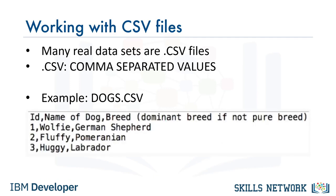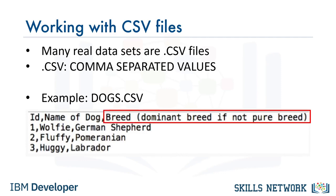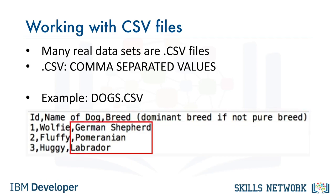Sample contents of the dogs.csv file are shown here. The first row in the table, in many cases, contains attribute labels which map to column names in a table. In dogs.csv, the first row contains the names of three attributes. Id is the name of the first attribute, and the subsequent rows contain Id values of 1, 2, and 3. The name of the dog is the second attribute, with dog names Wolfie, Fluffy, and Huggy as the values. The third attribute is called breed — either the dominant breed or pure breed name — with values of German Shepherd, Pomeranian, and Labrador.